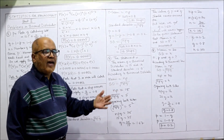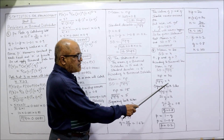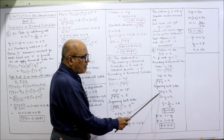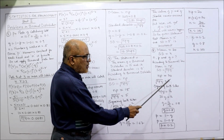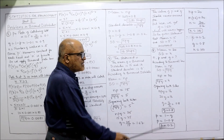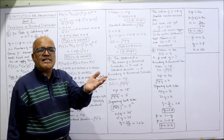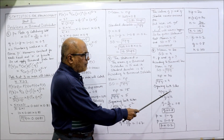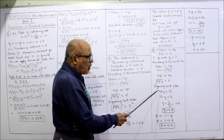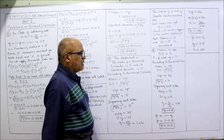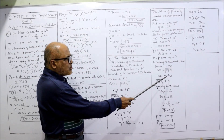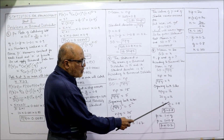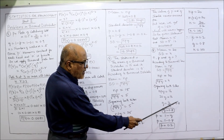Squaring both sides to remove the root: NPQ = 4² = 16. Since NP = 20, substituting gives 20Q = 16. Therefore Q = 16/20 = 0.8.